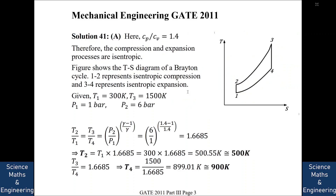The answer is A: 500 Kelvin and 900 Kelvin. Since gamma (Cp/Cv) equals 1.4, the compression and expansion processes are isentropic. In the T-S diagram of the Brayton cycle, process 1-2 is isentropic compression and process 3-4 is isentropic expansion, while 2-3 and 1-4 are isobaric processes.